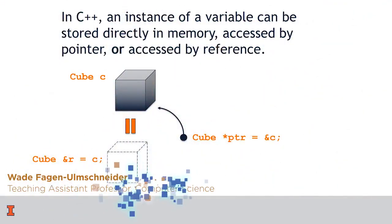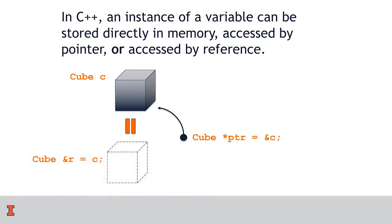Right now, you understand both how a class exists in C++ and how variables are created and stored. I want to take a minute and talk about the intersection of these two topics, where an instance of a variable — any variable including objects like our cube class — can be stored three different ways: directly in memory, accessed via a pointer, or accessed by a reference. Let's look into detail about each of these and how they interact with our class.